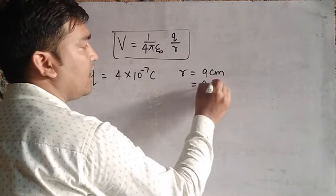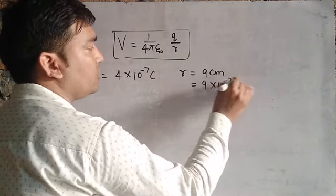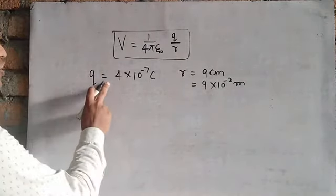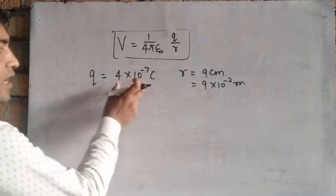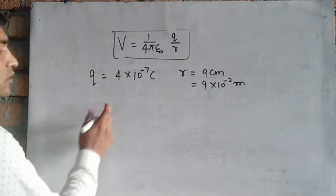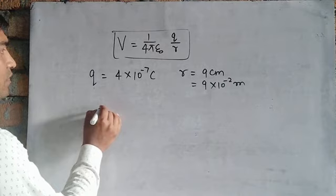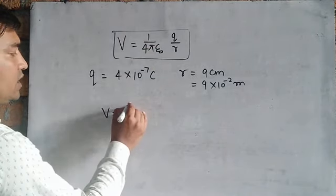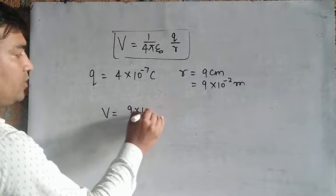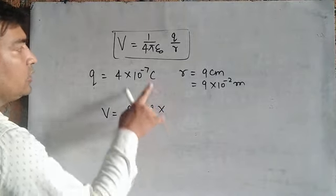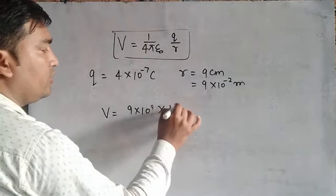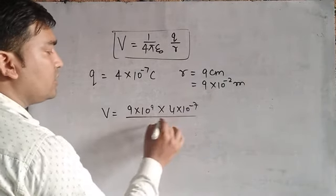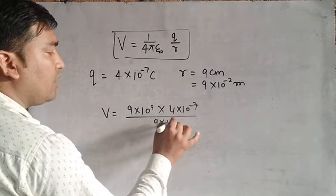That is, r equals 9 into 10 to the power minus 2 meters. The question is: what is the potential at 9 centimeters from this charge? Using the formula, the value of 1 upon 4 pi epsilon 0 is 9 into 10 to the power 9, q equals 4 into 10 to the power minus 7, and r equals 9 into 10 to the power minus 2.